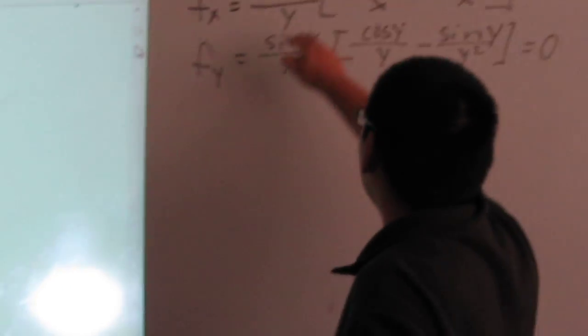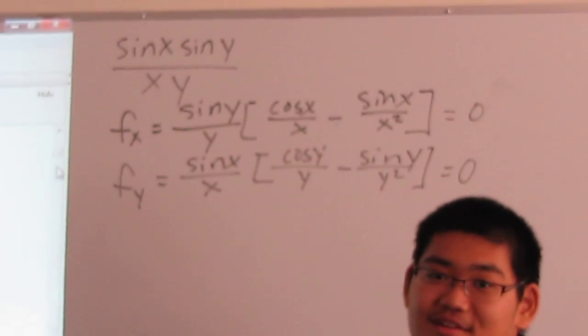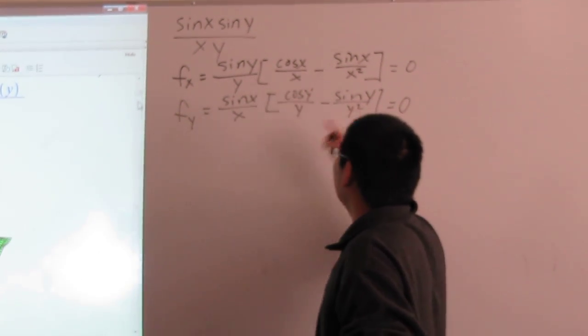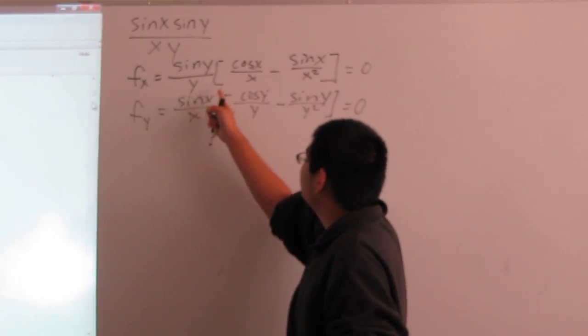So first, we'll take the partial. I've already done that for you, so you don't have to do that. And you get that. Now, if you distribute for the first one,